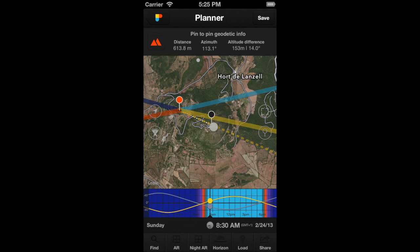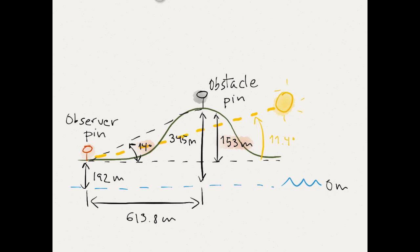Let's check it. The relative elevation between pins is 14 degrees. The elevation of the Sun at this time is 11.4 degrees. This is less than 14 degrees, and therefore the Mountain will hide the Sun. Let's have a look at the picture. We know that the elevation of the Sun at this time is 11.4 degrees, which is less than the relative elevation between the Observer's Pin and the Obstacle's Pin, which is 14 degrees. Therefore, the Mountain will hide the Sun.